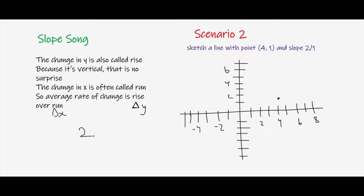So our slope is 2/1. And so 2 is rise or I could have written delta y and 1 is the run.